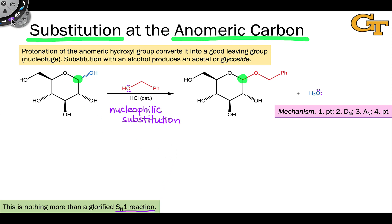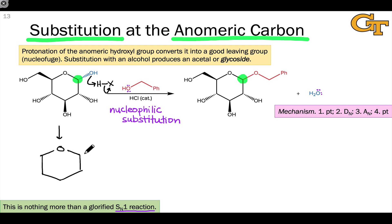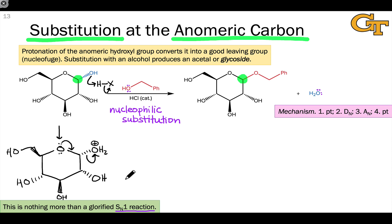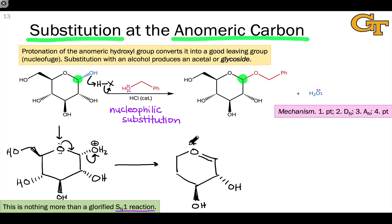Let's draw some curved arrows and intermediates to see what we mean. In the first step, the anomeric hydroxyl group is protonated by the acid. While all other hydroxyl groups can be protonated, only the anomeric hydroxyl can depart with a pair of electrons to form a resonance-stabilized cation. We can draw that departure as a D-sub-N step with the C–O bond breaking toward oxygen, or as a beta elimination involving the adjacent oxygen. Involving that adjacent oxygen shows that the positive charge in the intermediate is delocalized over carbon and oxygen — we draw the O-plus resonance form, though an alternative C-plus resonance form also exists.